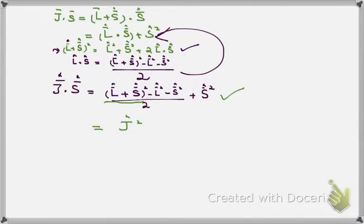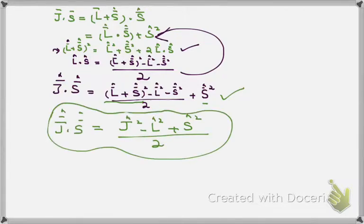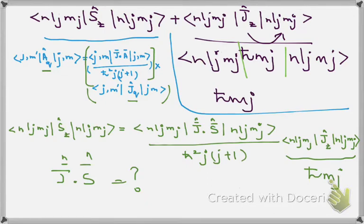So we have J·S = (J² - L² + S²)/2. Now put it in this term. This term, as we have found J·S, and now we put the J·S in this term.